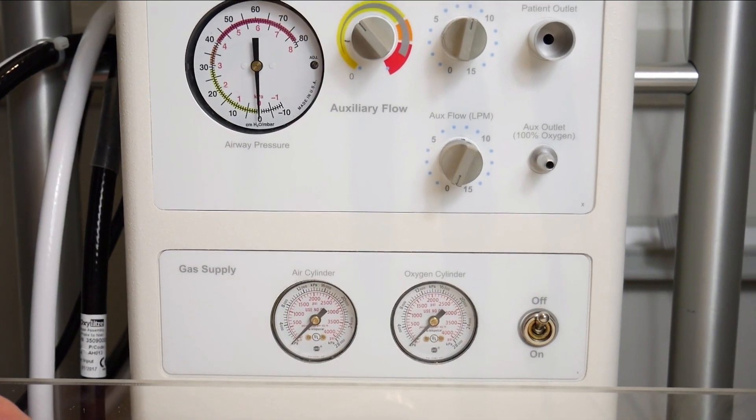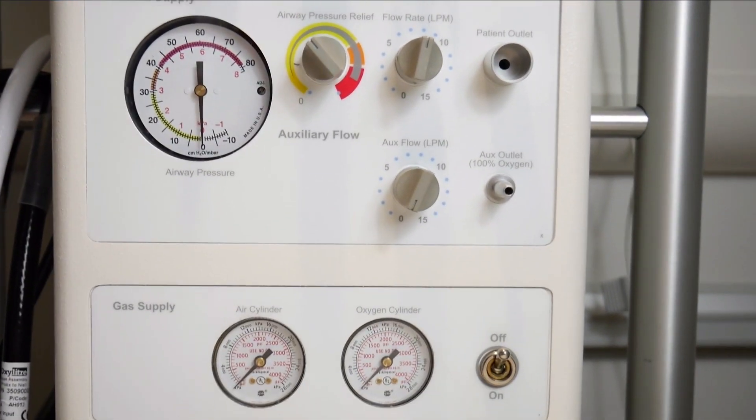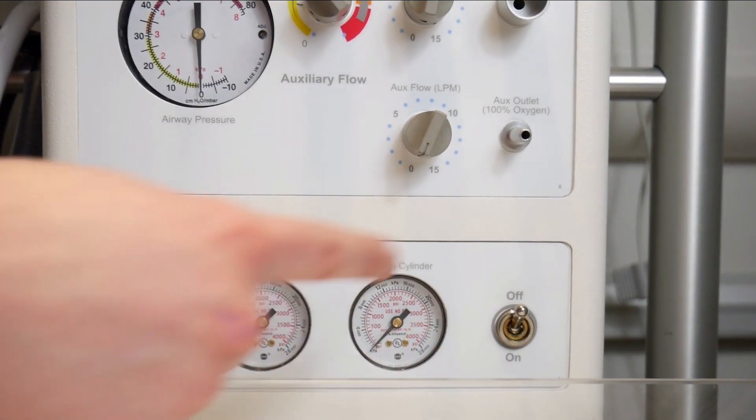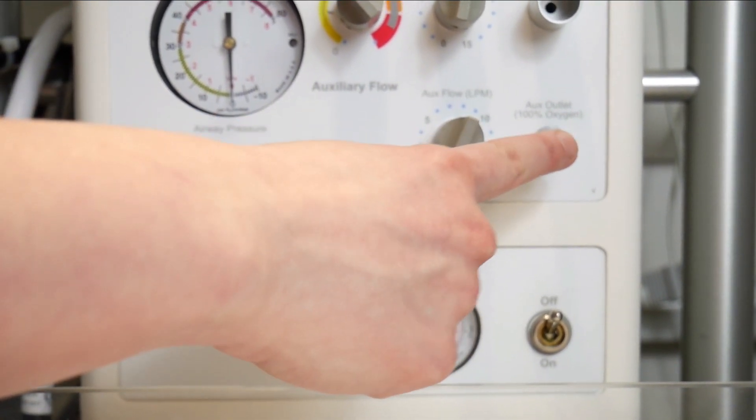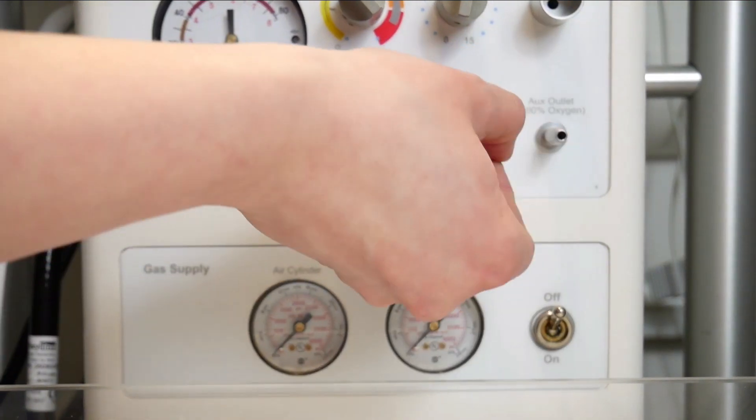Below this you have an alternative gas outlet that always runs on a hundred percent oxygen. You can attach a Waters or anaesthetic circuit here, and you adjust the flow rate in the same way as above using this dial.